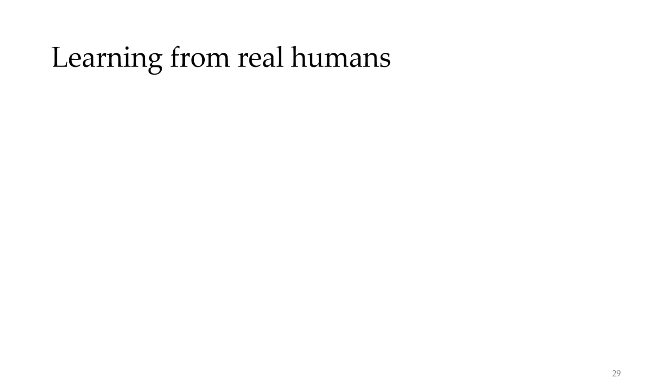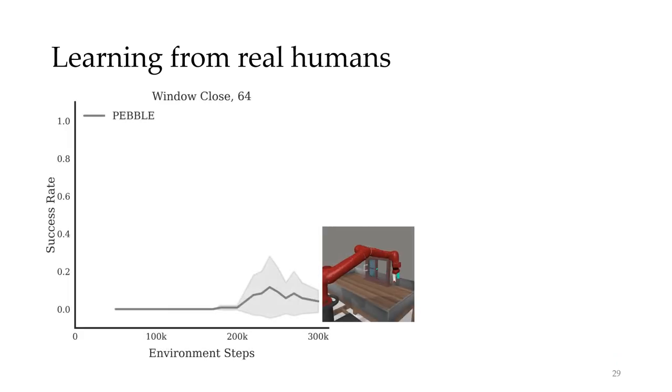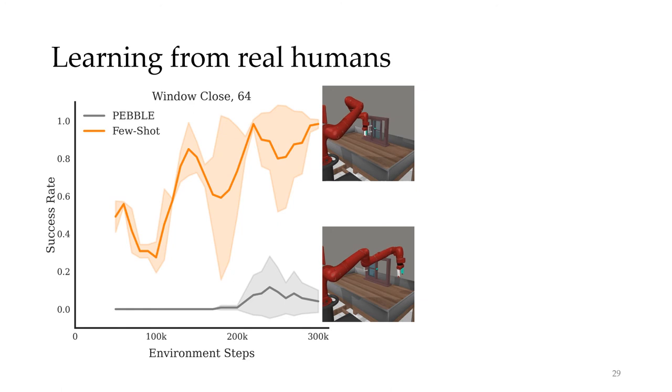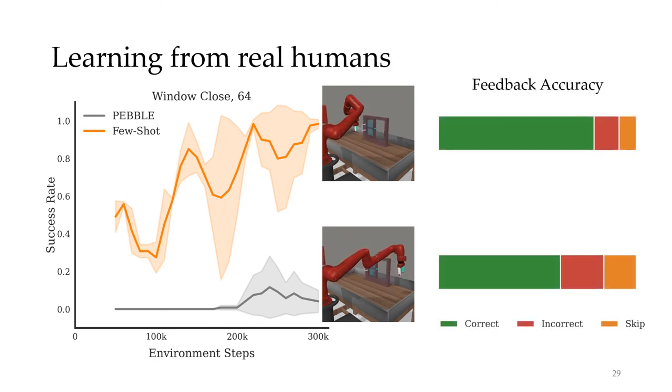Because of the increase in query efficiency, we can also ask real human users to train manipulation policies. Here's a window closed task with only 64 human queries. Pebble fails to make any progress, but our few-shot method converges to the near-optimal policy using only a few noisy human queries. Moreover, the few-shot method seems to ask questions that are easier to answer. Human users tend to be more accurate answering the queries from our model instead of the un-pre-trained model used in Pebble.